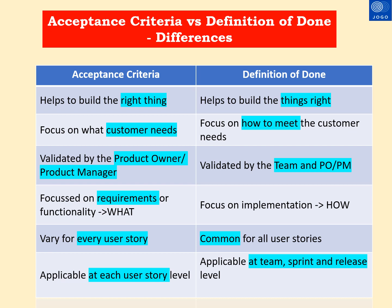Acceptance criteria is focused at each user story level, while the definition of done is focused across all user stories. Acceptance criteria is applicable at each user story level, whereas the definition of done can be defined at the team level, sprint level, and the release level. These are the key differences between acceptance criteria and definition of done.